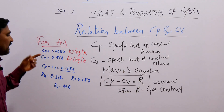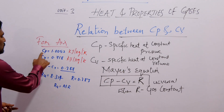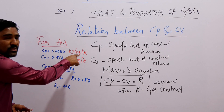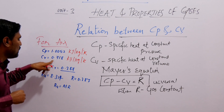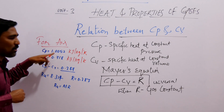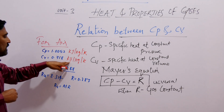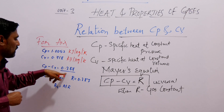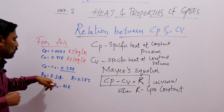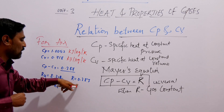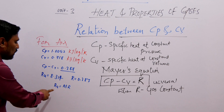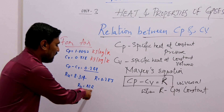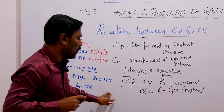Cp is equal to 1.0052 kJ per kg Kelvin and Cv is equal to 0.718. They give a difference of 0.287. Substituting into Ru equals M into R, where M is the molecular mass of the body and R is the universal gas constant.